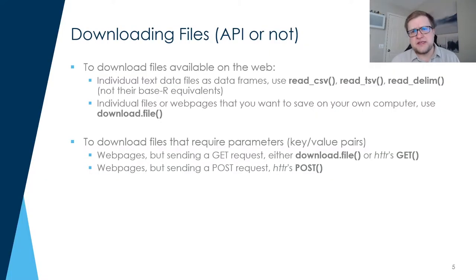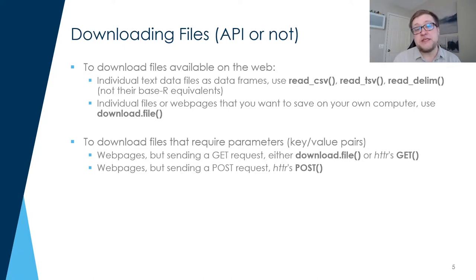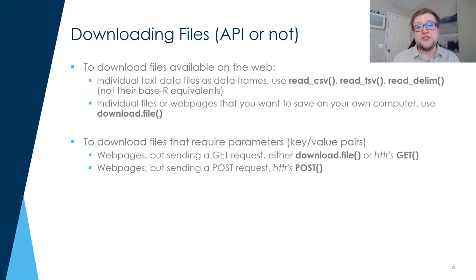If you're not getting CSVs or TSVs or some other delimited file, you can use download.file as a function, which will grab individual files of whatever type they might be, and then you can process them post hoc. If you're using GET requests, there's also a GET function inside HTTR, and there are some advantages to using that versus just putting the URL directly as a parameter of the read_csv function. If you're sending POST requests, you'd want to investigate the POST command also in HTTR.